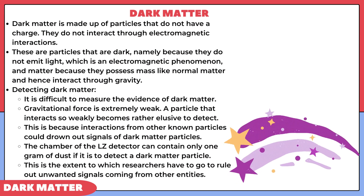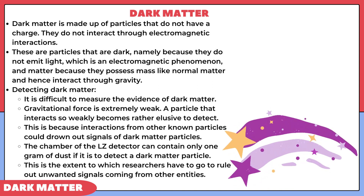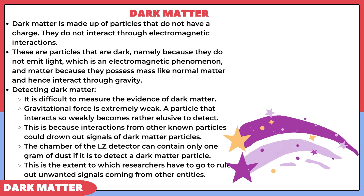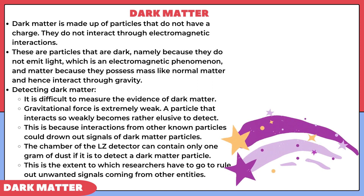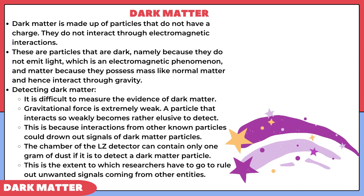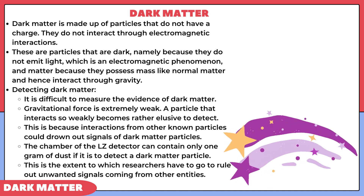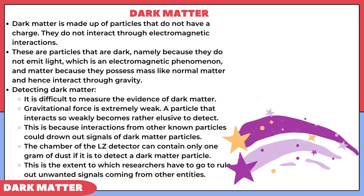Dark matter is made up of particles which do not have a charge and do not interact through electromagnetic interactions. These particles are 'dark' because they do not emit light — emitting light is an electromagnetic phenomenon, and dark matter does not emit light. Because they possess mass like normal matter, they interact through gravity rather than electromagnetic interactions. When it comes to detecting dark matter, it is difficult to measure evidence of it because the gravitational force is extremely weak, making these particles rather elusive to detect.